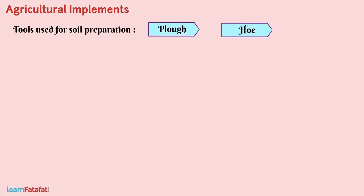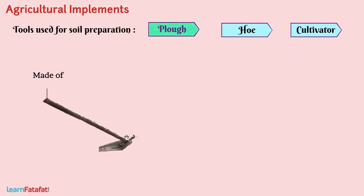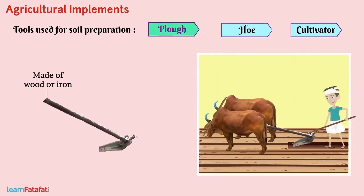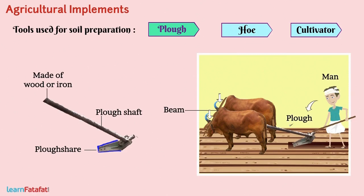Agricultural Implements. The main tools used for soil preparation are the plow, hoe, and cultivator. The plow is made of wood or iron and is usually drawn by a pair of bulls or other animals. It consists of a plowshare, which is a strong triangular iron tip, a plow shaft, the long log of wood, a handle at one end, and a beam at the other end placed on the bull's neck. A man can operate the plow using a pair of bulls.